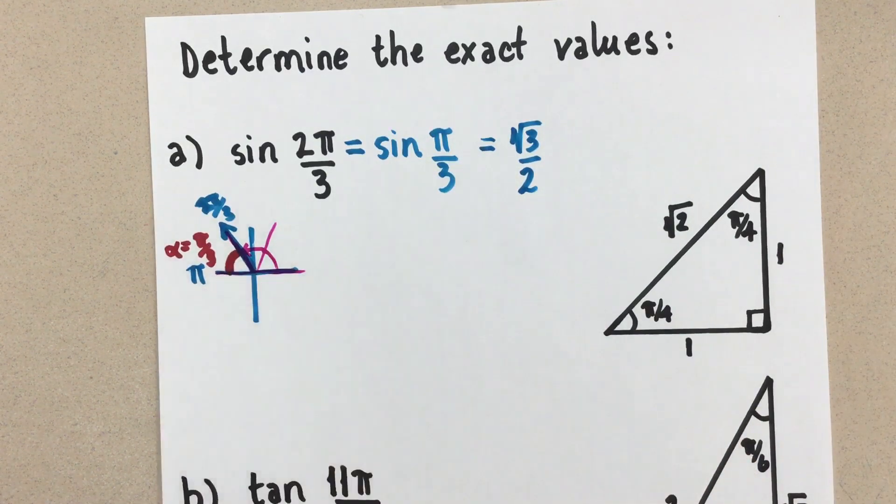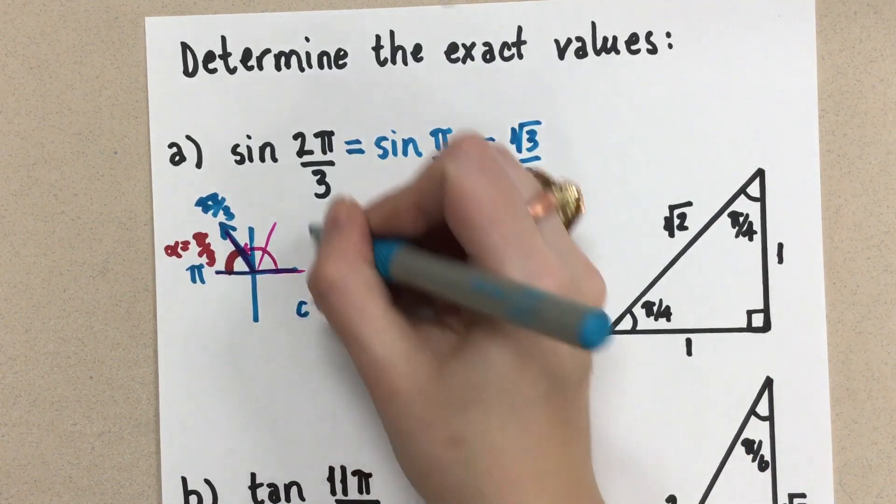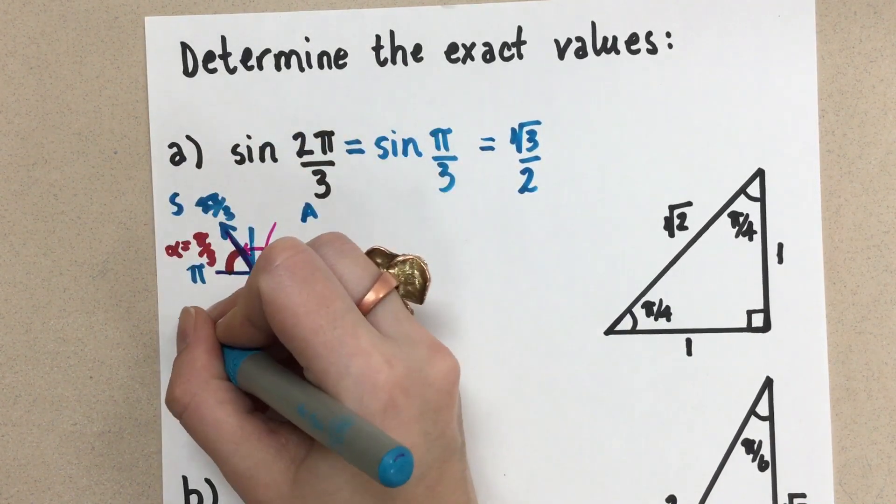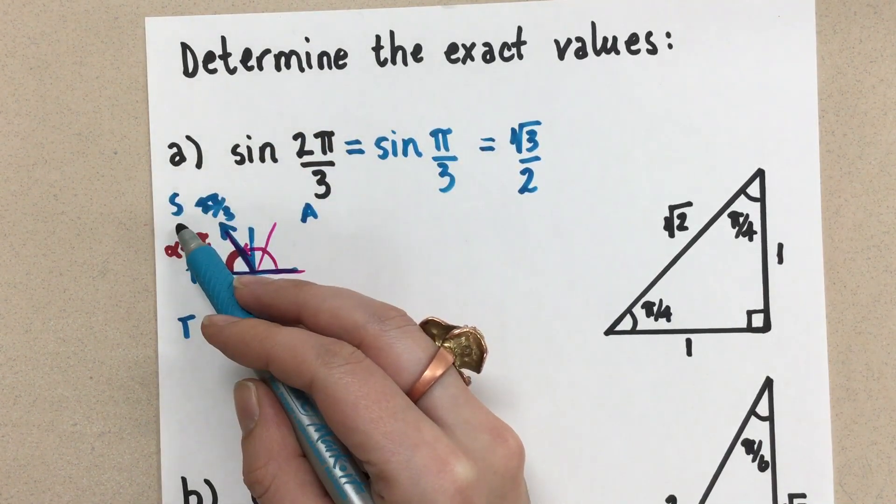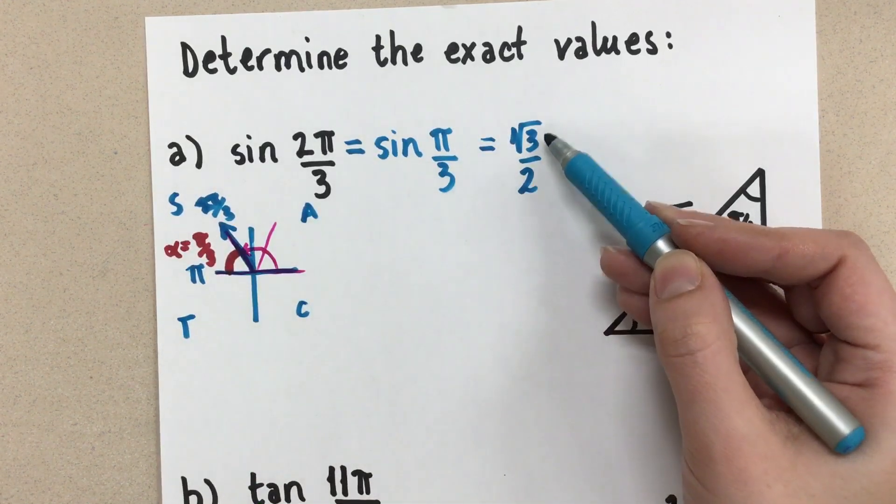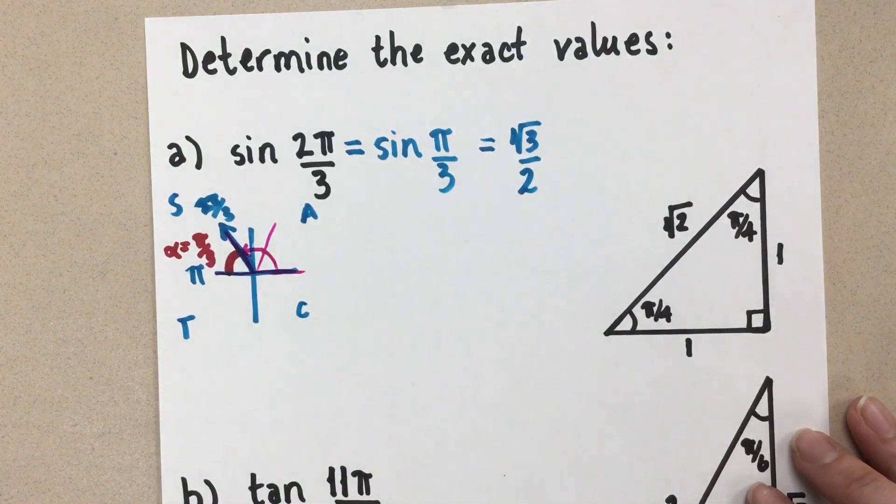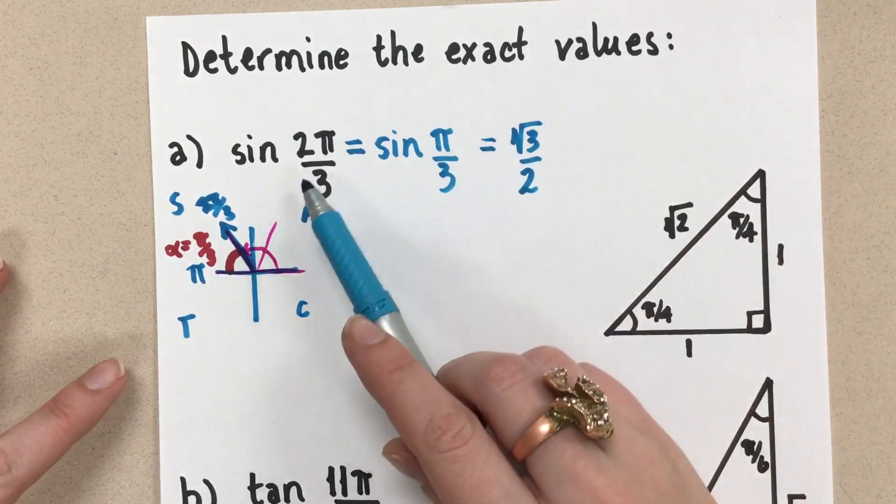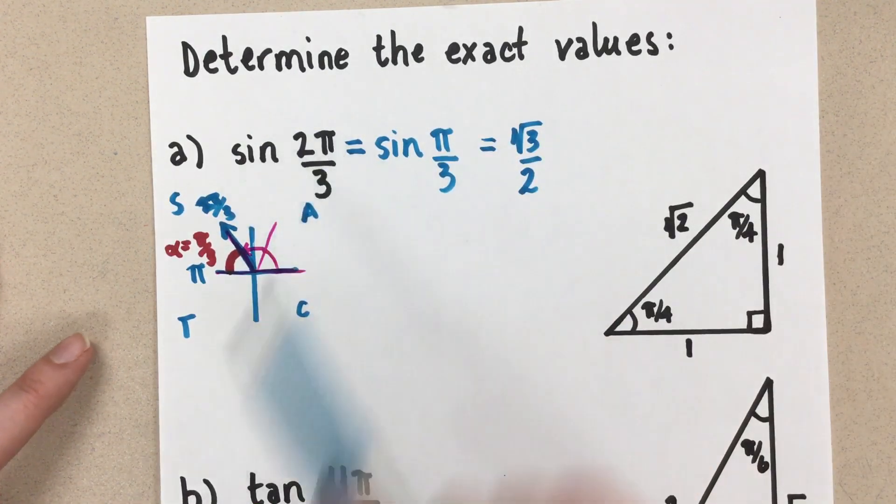So the last thing we want to do is check our cast rule. We know that in the second quadrant, which is what we're working in, the sine ratio is positive. So this value of root 3 over 2 is going to remain exactly as it is, positive. And there it is, the exact value for our original sine, 2π over 3.